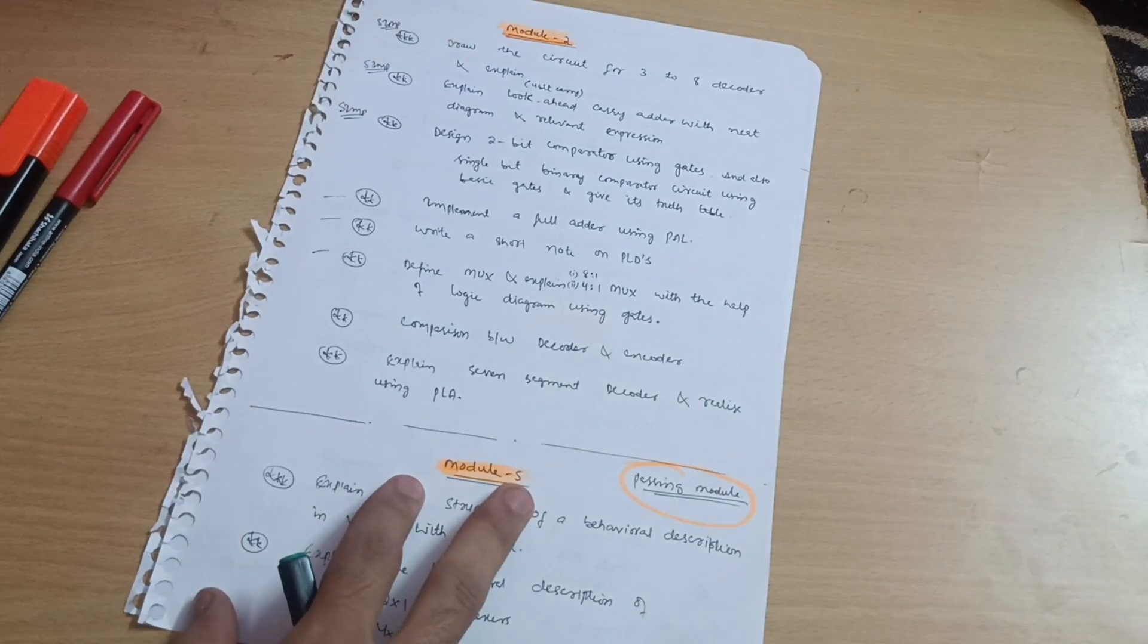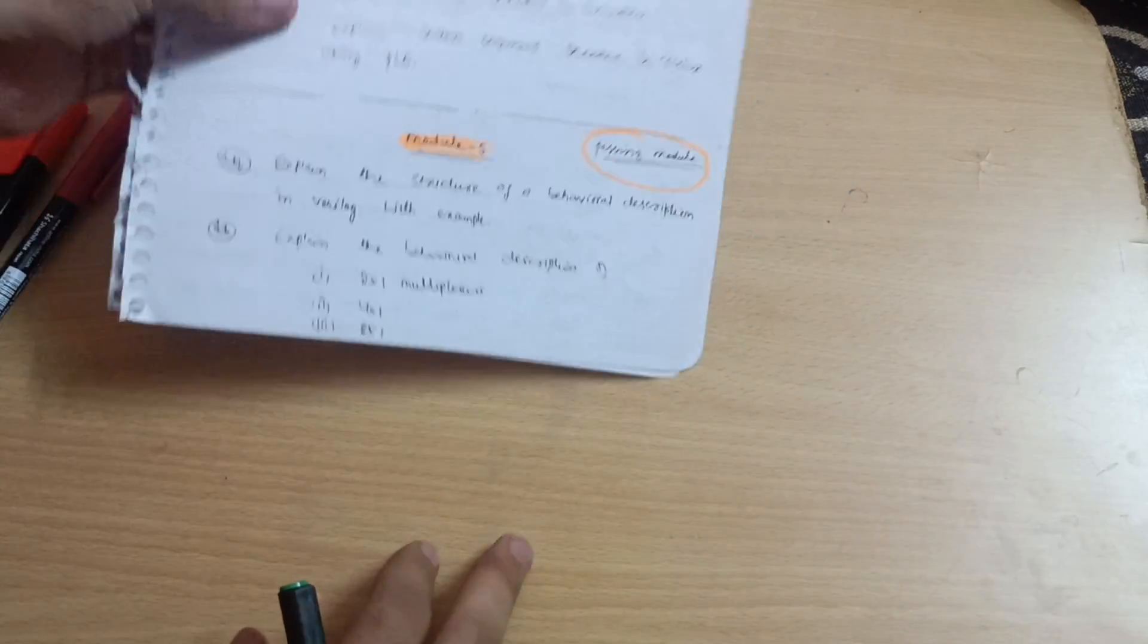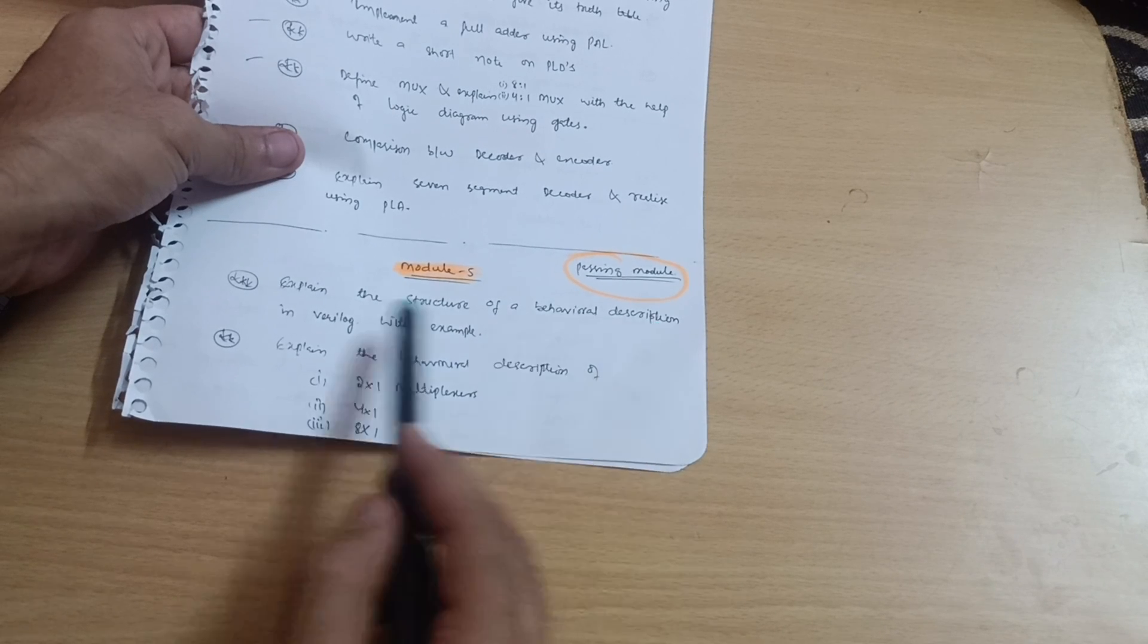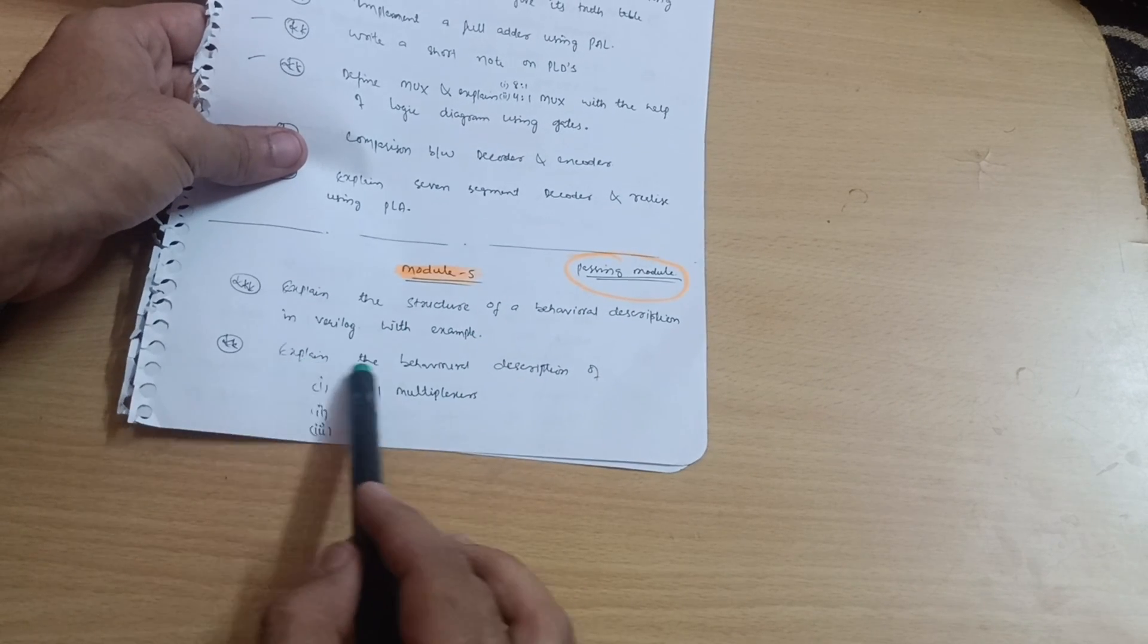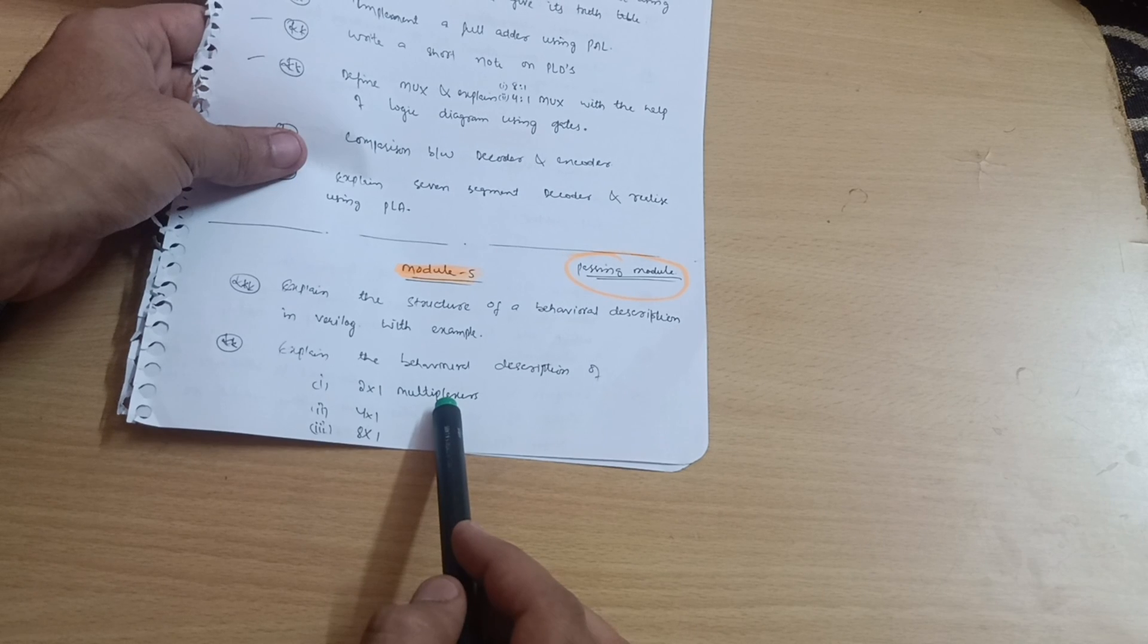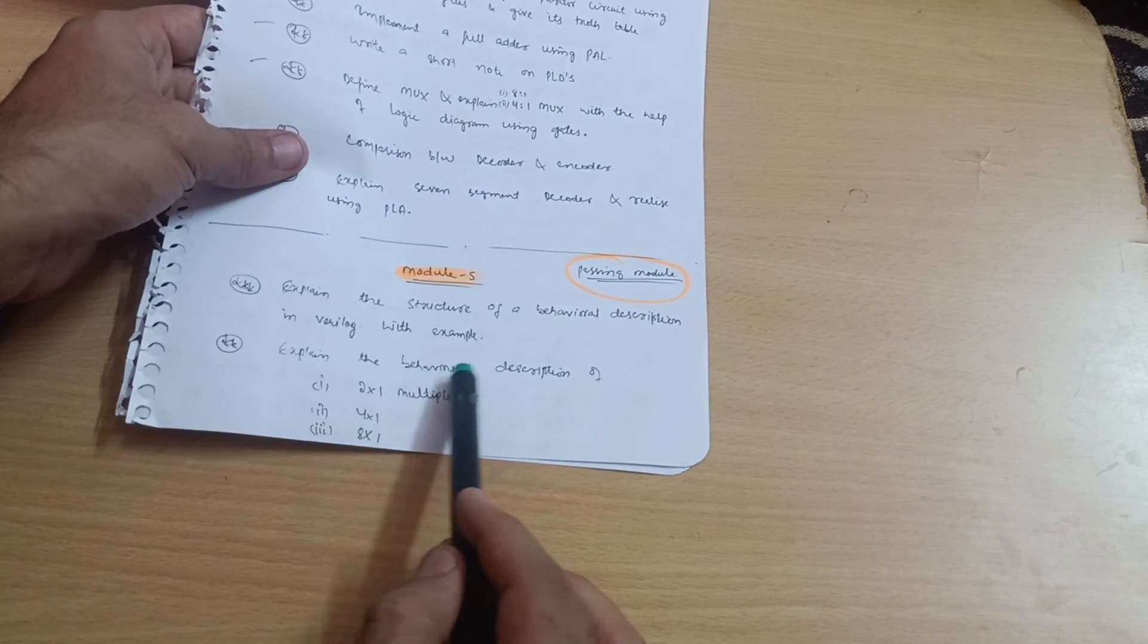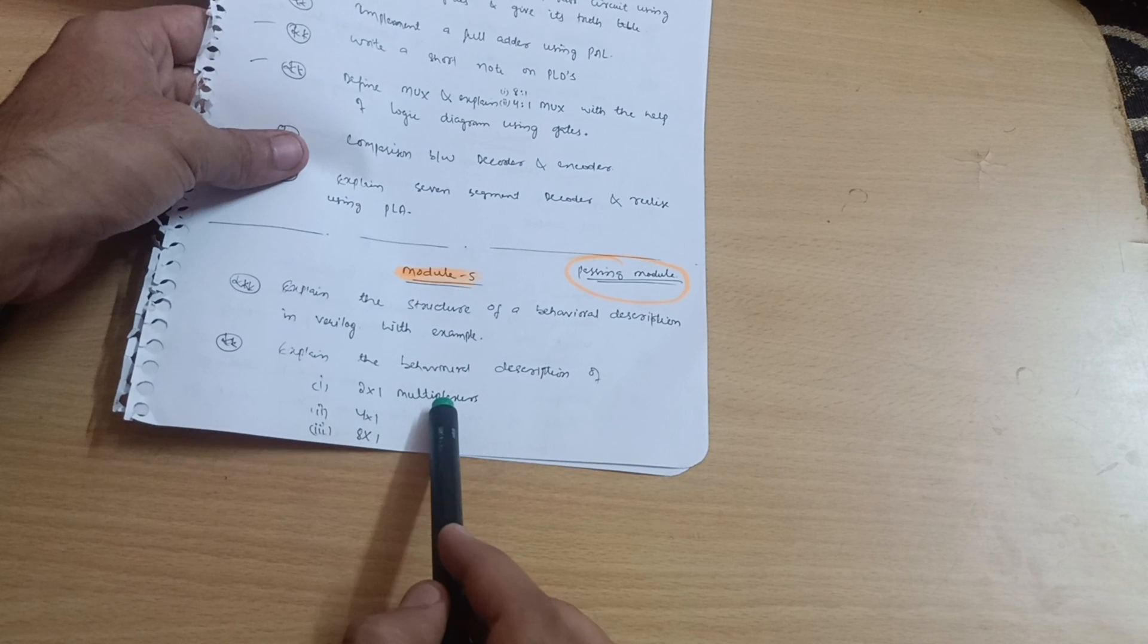Let's move to another passing module which is your module fifth. Explain the structure of a behavioral description in Verilog with example. Explain the behavioral description - this may be different questions or there may be a possibility like explain the behavioral description of 2-to-1 multiplexer.